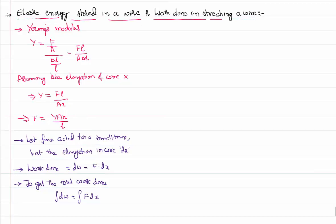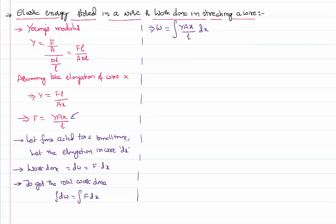Simplifying further, the integral of dw is simply the total work done. I know the value of F from Young's modulus: F equals Y times A times x divided by L. So the integral becomes the integral of Y times A times x divided by L, times dx. Since for a given wire Young's modulus, area of cross-section, and length are constants, this simplifies to Y times A divided by L, times the integral of x dx.